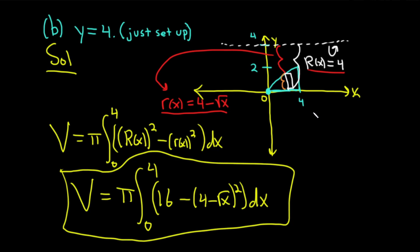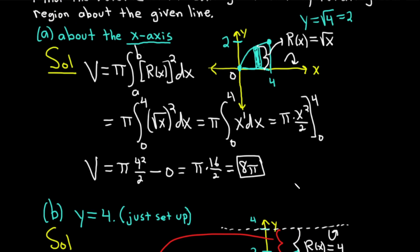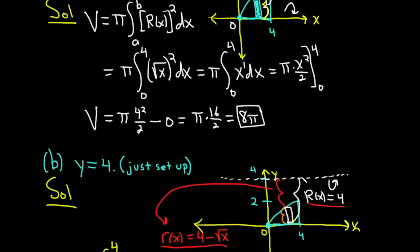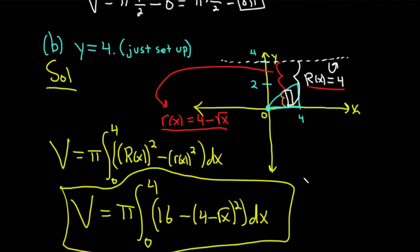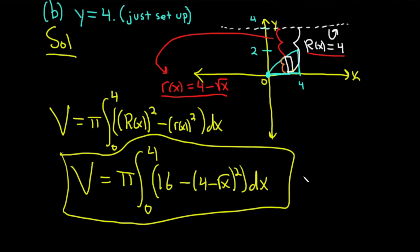Just a quick recap: big R is always that full distance from the far end of the rectangle to the axis of revolution, no matter what. And little r is going to be that shorter distance. If you always draw the picture, draw your rectangle, and write down big R and little r, you should be able to do any problem. These problems take a lot of practice, and I hope this video has been helpful. Make sure to check out more videos on Chegg. Good luck.